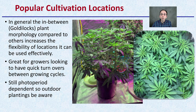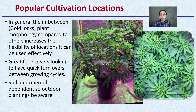However, indicas are still photoperiod dependent, so outdoor plantings should be aware. Timing is important because they grow shorter — you don't want to plant them too late in the season, because they might get flipped into flower a little bit sooner and stunt them even further.